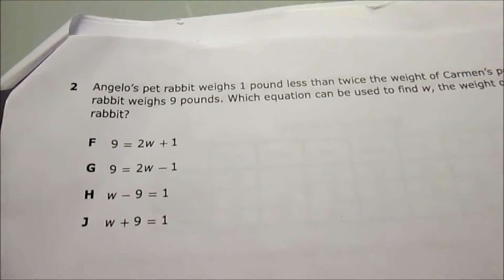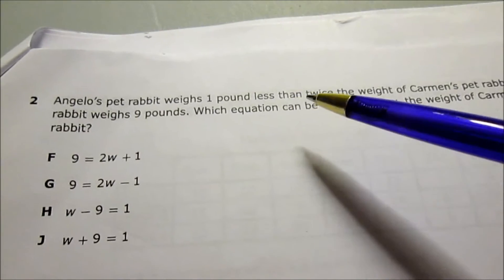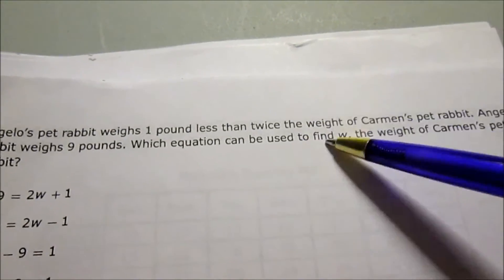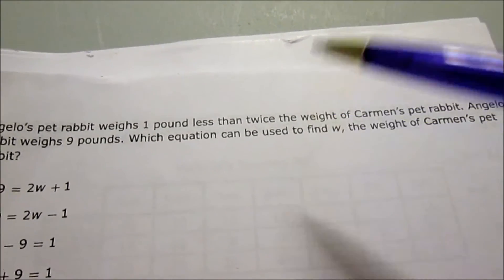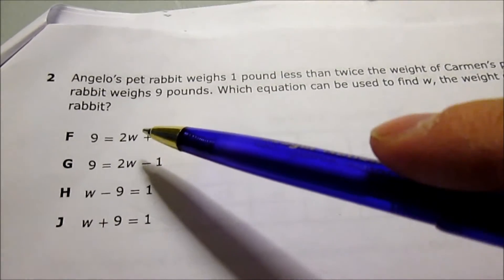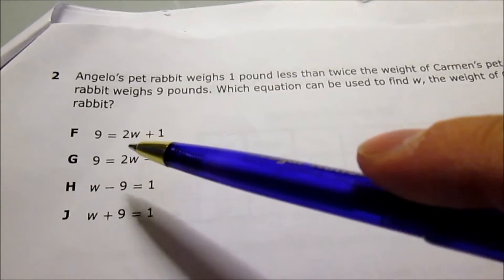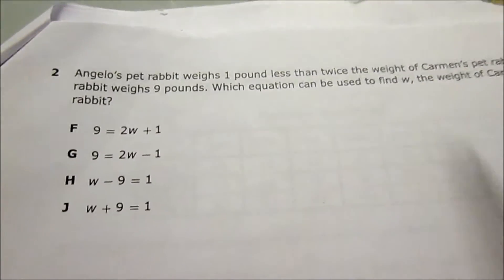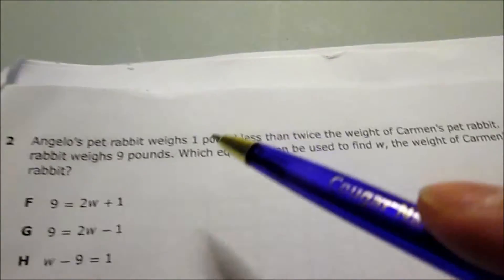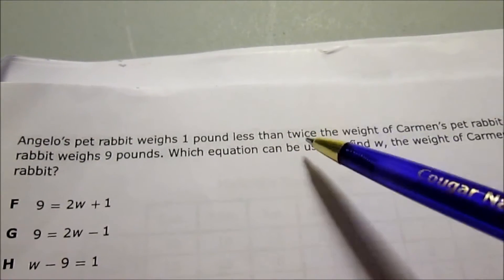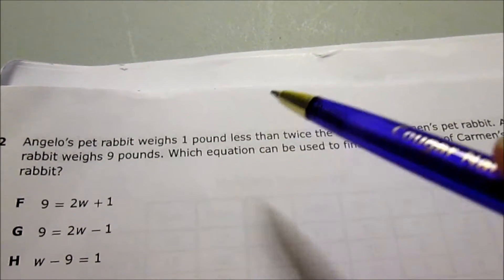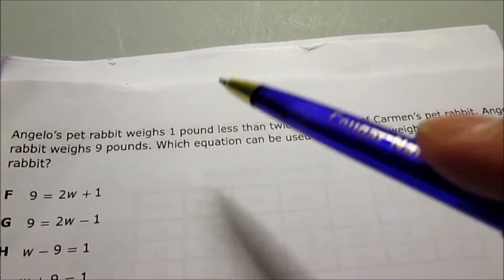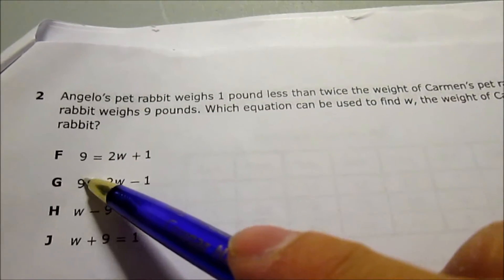Second question: Angelo's pet rabbit weighs 1 pound less than twice the weight of Carmen's pet. Twice weight of Carmen's rabbit means 2 times something. So the answer choice is 2 times something, 2 times something. Not here, not here. That means your answer choices are F and G. The rabbit weighs 1 pound less than twice the weight. After 2 times the weight, you need to subtract 1 because it's less, minus 1. That leaves G as the best answer.